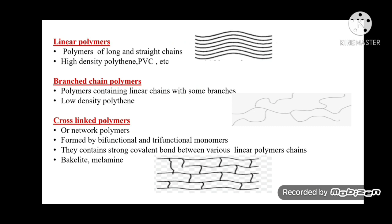Linear polymers have long and straight chains; examples include high density polyethylene and PVC. Branched chain polymers contain a linear chain with some branches; low density polyethylene is the example. Cross-linked or network polymers are formed by bifunctional or trifunctional monomers and contain strong covalent bonds between various linear polymer chains; examples are Bakelite and melamine.